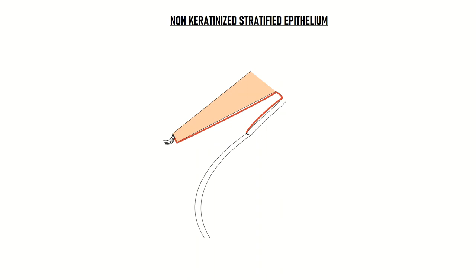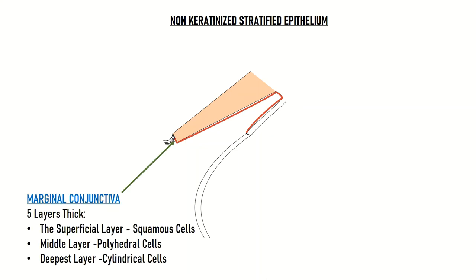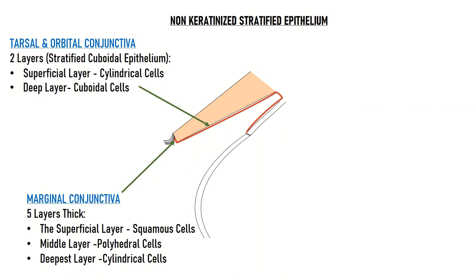The epithelium is non-keratinized stratified epithelium, but the number of layers and the types of cells differ greatly from the eyelid margin to the limbus. At the mucocutaneous junction, the keratinized stratified squamous epithelium of the eyelid skin changes to non-keratinized stratified squamous epithelium of the marginal conjunctiva — five layers thick, with superficial squamous cells, middle polyhedral cells, and deepest cylindrical cells. At the subtarsal sulcus, the epithelium transforms to stratified cuboidal epithelium of only two layers: a superficial layer of cylindrical cells and a deep layer of cuboidal cells, covering the tarsal and orbital parts of the palpebral conjunctiva.